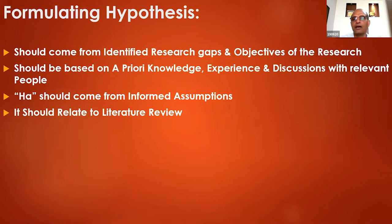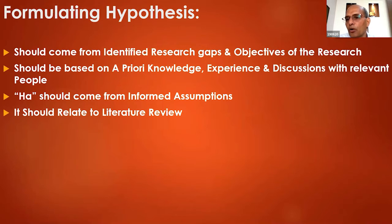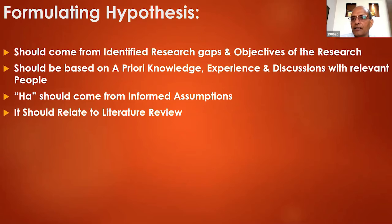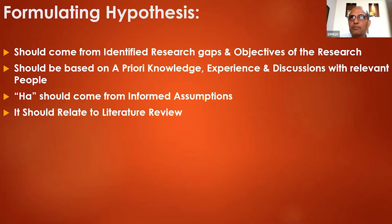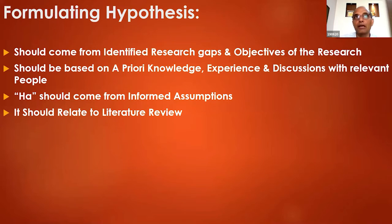Let's look at formulating a hypothesis. Where should I bring my hypothesis from? My hypothesis should come directly from my research objective and research gap, and it should be based upon a priori knowledge, your own experience, or discussions with relevant people. The H-alternate especially should come from informed assumptions. In H-alternate you have three options: not equal to H-naught, greater than H-naught, and less than H-naught. Which one you pick should come from your own informed assumption — what does your past experience say, what does your literature say.